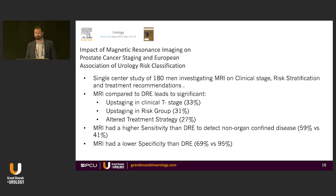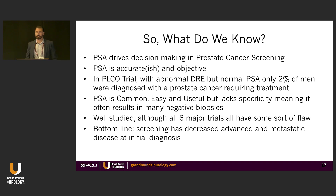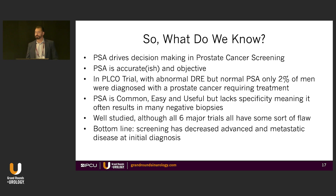If it were me, I want an MRI — I want to know what's going on. PSA is driving decision-making; it's pretty accurate and objective. In the PCL trial, if you have an abnormal DRE but a normal PSA, only 2 percent of men had cancer that really needed treatment. It's useful and helpful, but every major trial looking at it has been flawed to some degree. Bottom line, it's a great tool — just use it right.